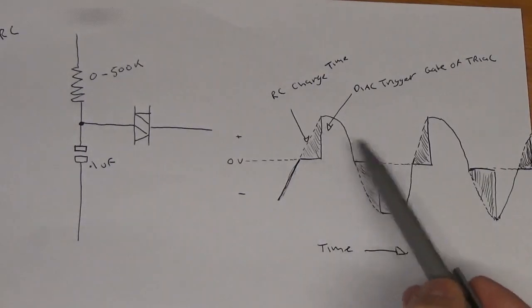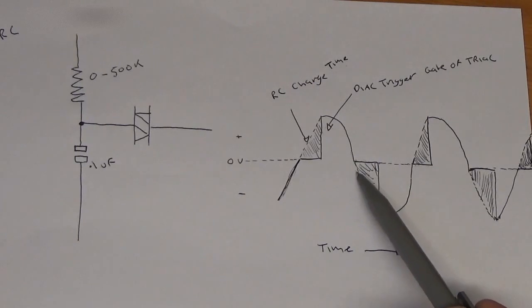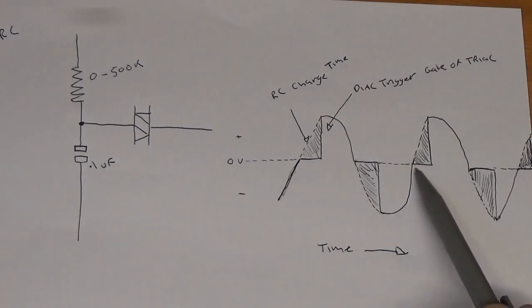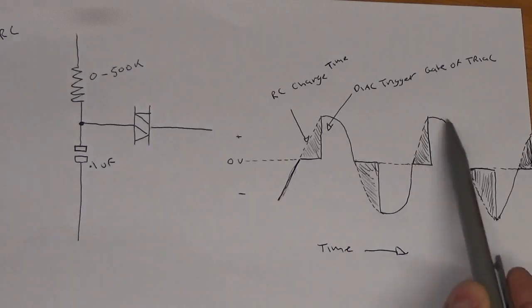In the negative half of the cycle, this shaded area would be the RC charge time, and 30 volts would be met, and then the diac snaps on again. Then the gate of the triac will start conducting thus through the lamp, and then the cycle repeats. Clear as mud again, you should be getting it now.